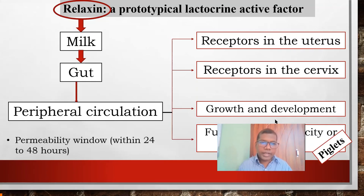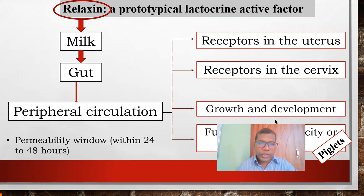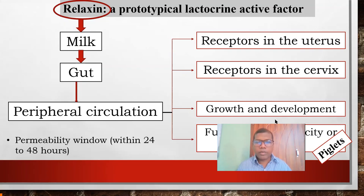Just after birth, the piglet gut permeability remains open for large molecules up to 48 hours. Colostrum has very high concentrations of protein, immunoglobulins, growth hormones, and other hormones that must be absorbed through the gut of the neonate. Therefore, colostrum feeding during this window is very important. Delaying colostrum feeding affects some cells. As soon as the piglet is born, it must be allowed to nurse, and human assistance is necessary if the piglet cannot find the teat.